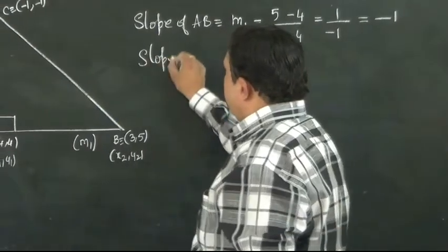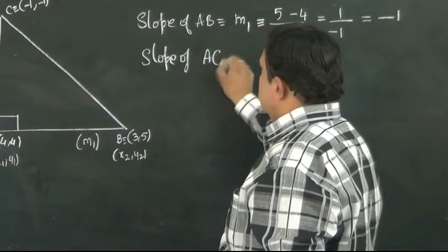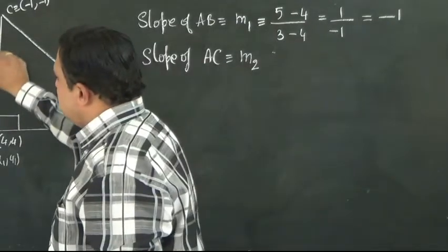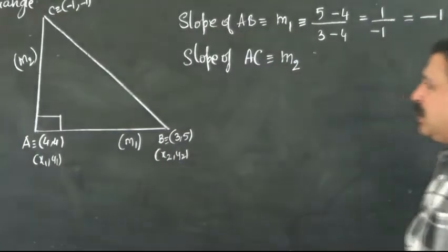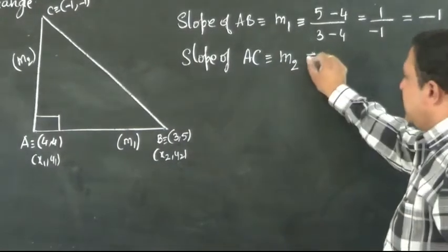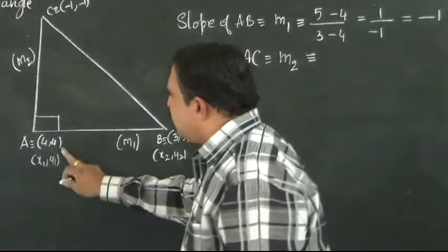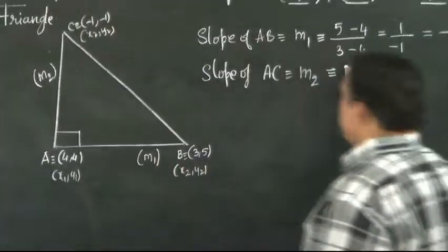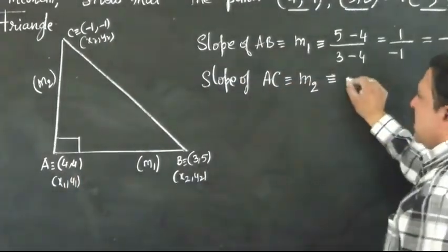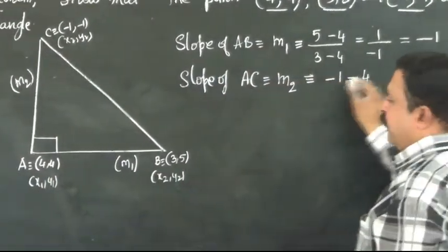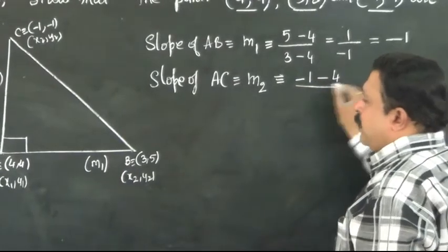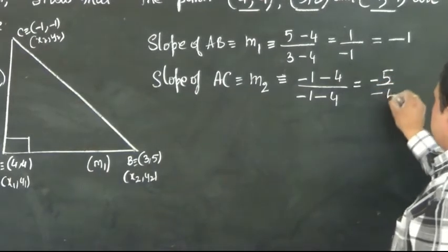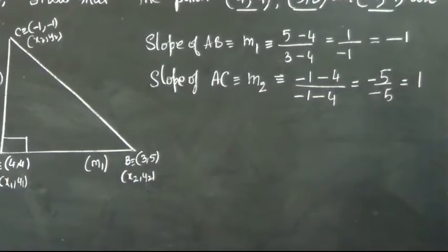Consider slope of AC. Let m2 denote the slope of AC. You can regard this as (x1,y1) and this point as (x2,y2). So the slope formula is minus 1 minus 4 divided by x2 minus x1, that is minus 1 minus 4. That is minus 5 over minus 5, which is equal to plus 1.